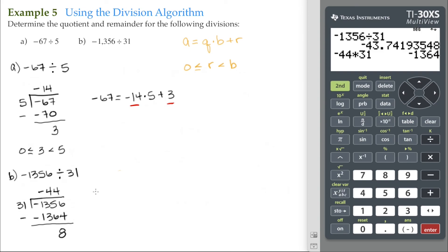Writing this in terms of the division algorithm: negative 1,356 equals negative 44 times 31 plus 8. Our quotient is negative 44 and our remainder is 8.